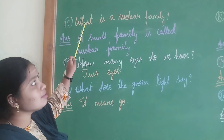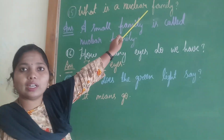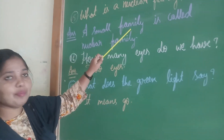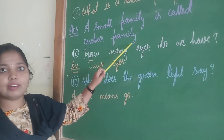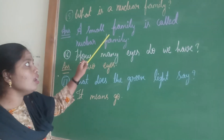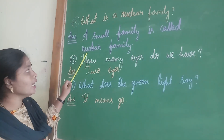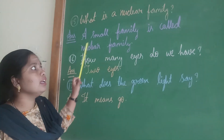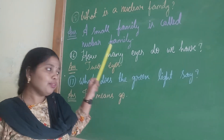Fifteenth question: What is a nuclear family? A small family is called a nuclear family. S-M-A-L-L, small family is called nuclear family. A small family is called nuclear family.